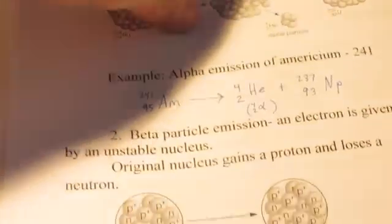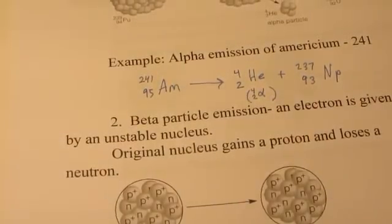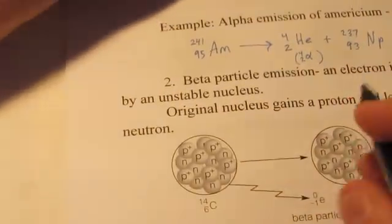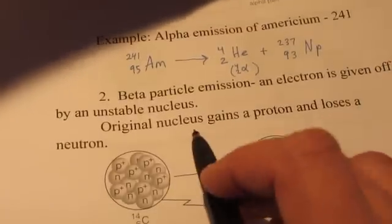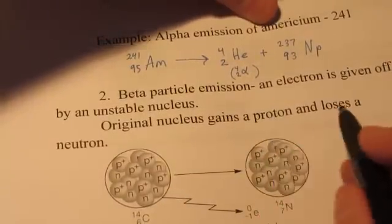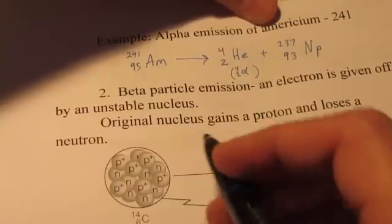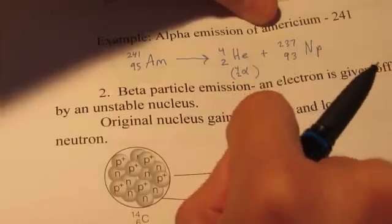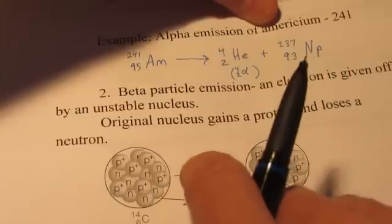Next up is beta emission. And in this case, an electron is given off by an unstable nucleus. Now that sounds a little bit unusual. An electron is given off by an unstable nucleus? How can that happen? Well, the nucleus actually gains a proton and loses a neutron. Now think about what happens when that occurs. Protons have a positive charge. That proton essentially turns into a neutron, a neutrally charged particle. So in the process.